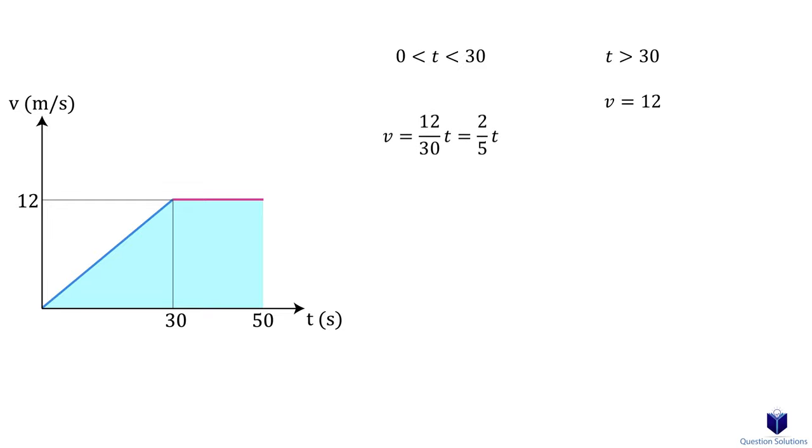To find the position-time graph, we need to integrate each segment. For the first segment, we have the following integration starting with a time of zero to a time of t. Now we can write the position as following. From this equation, we can find the value of s at a time of 30 seconds. Substituting 30 into our equation gives us the following.